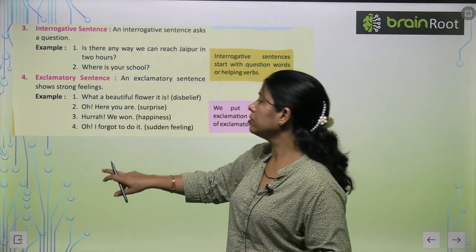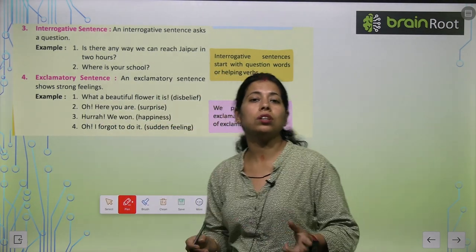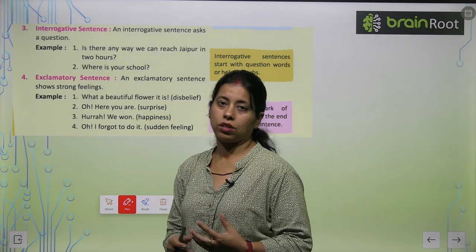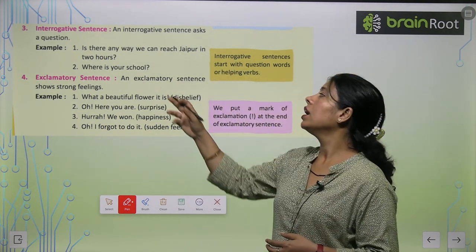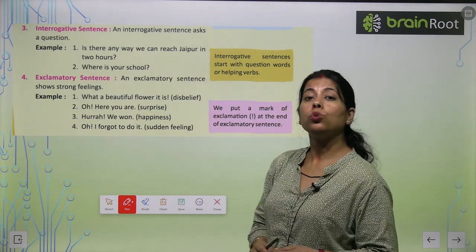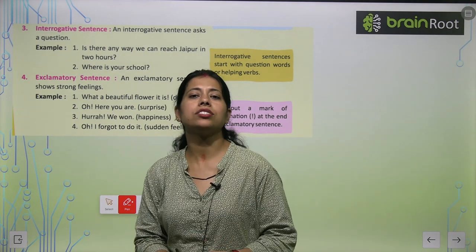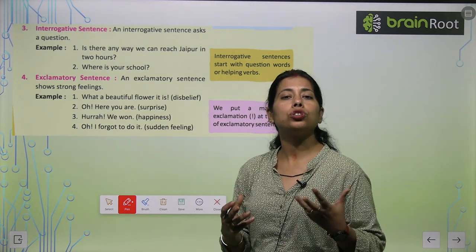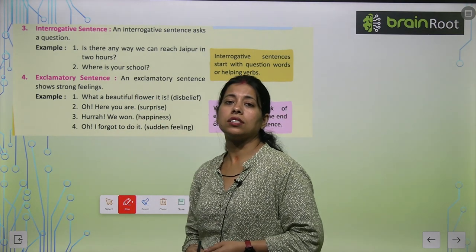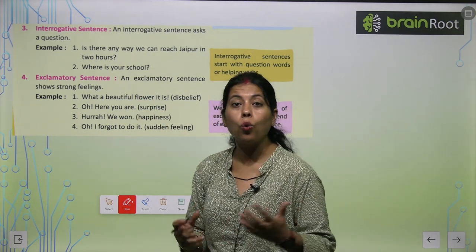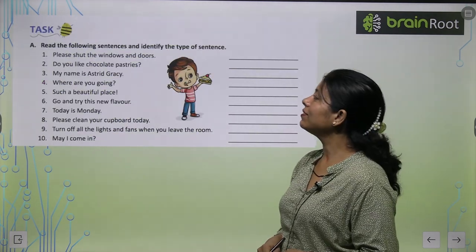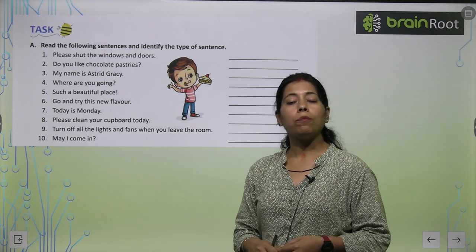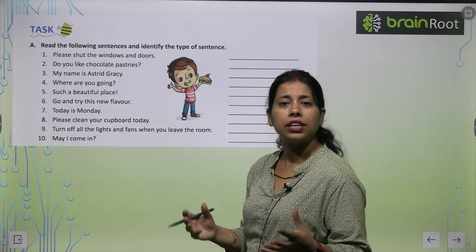The third type is the interrogative sentence. An interrogative sentence asks a question. For example: 'Is there any way we can reach Japan in two hours?' Another example: 'Where is your school?' These sentences ask questions.